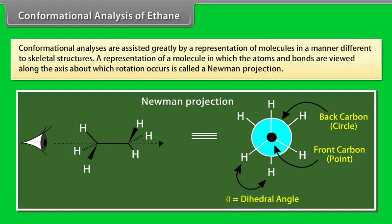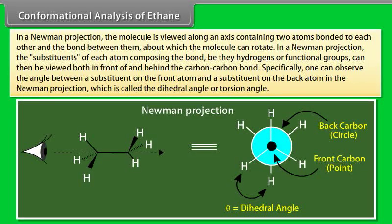For alkanes, various conformations can be represented by using dash-wedge notation in a structural perspective drawing. An alternate depiction is a Newman projection, which views a molecule by looking down a C-C bond axis, showing the relative orientation of groups of the two carbon atoms. Conformational analysis is assisted greatly by a representation of molecules in a manner different to skeletal structure. A representation of a molecule in which the atoms and bonds are viewed along the axis about which rotation occurs is called a Newman projection.